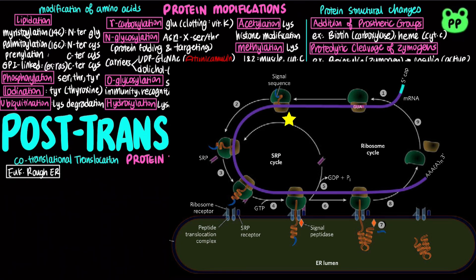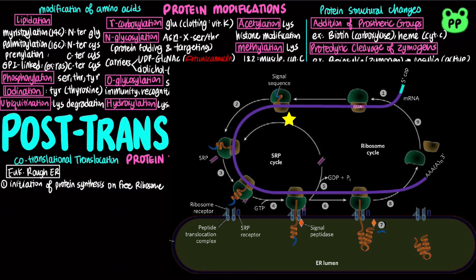First, the initiation of protein synthesis begins on the free ribosome. The signal sequence appears early in the synthetic process because it is at the amino terminus, which is synthesized first. Signal recognition particle, abbreviated as SRP, recognizes the signal sequence and binds the ribosome. SRP then binds GTP and halts elongation of the polypeptide when it is about seven amino acids long and the signal sequence has completely emerged from the ribosome.